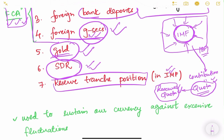The reserve quota is the portion a country can borrow freely from the IMF without much approval or stringent conditions. This is known as the Reserve Tranche Position (RTP) in the IMF. Because the country can tap this reserve quota freely without going through extensive IMF regulations and conditions, it is essentially free money — meaning the monetary authority can use it whenever needed.